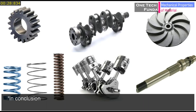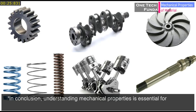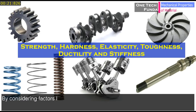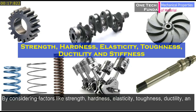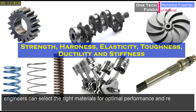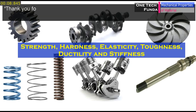In conclusion, understanding mechanical properties is essential for materials engineering and design. By considering factors like strength, hardness, elasticity, toughness, ductility, and stiffness, engineers can select the right materials for optimal performance and reliability in a wide range of applications.